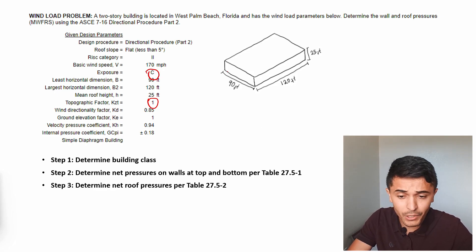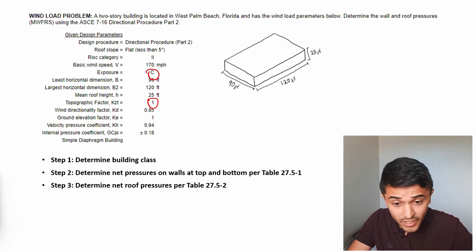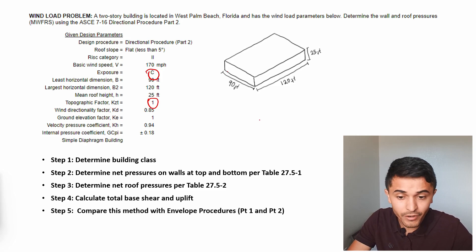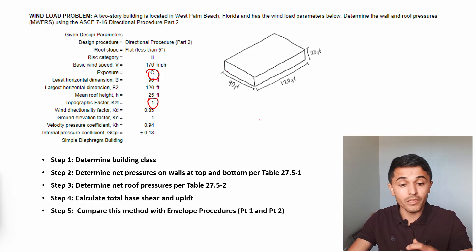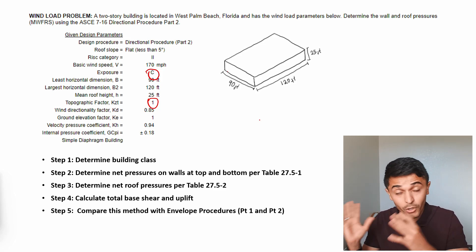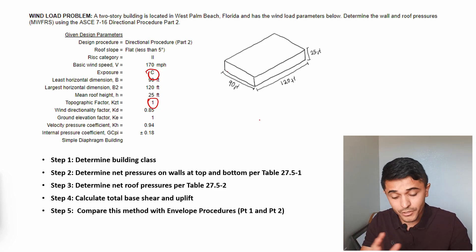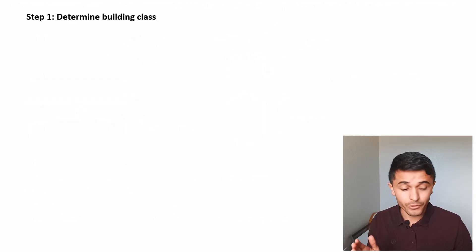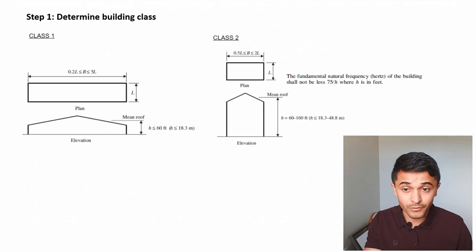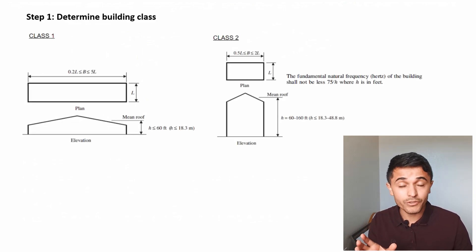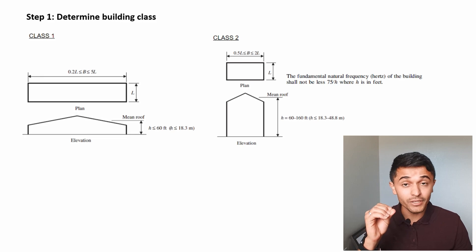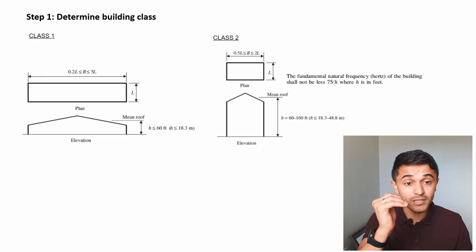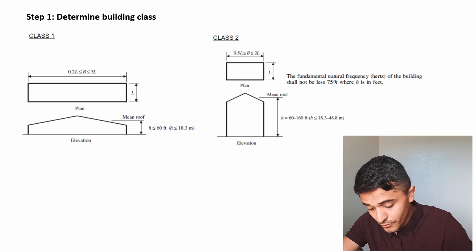Continuing with our steps, we need to calculate the total base shear and uplift, and finally compare this method with the envelope procedures from part 1 and part 2. To determine building class: class 1 is for buildings up to 60 feet in height, and class 2 is for buildings above 60 feet but up to 160 feet.